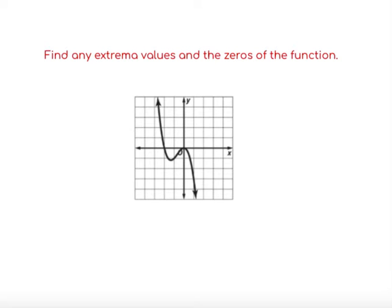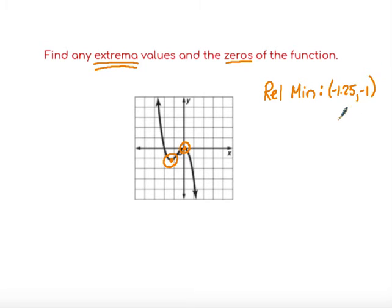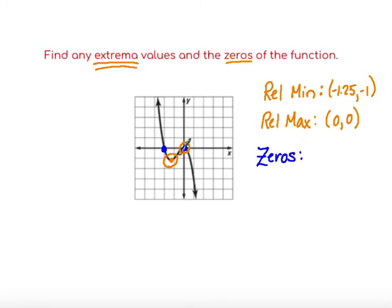Let's look at this polynomial function. It says find any extrema values — our mins and maxes — and find the zeros. Looking for the lowest and highest points: there's a low and there's a high. There's a relative minimum at approximately (−1.25, −1), and the relative maximum happens right at the origin — the point (0, 0). Now looking for the zeros: where does this function cross the x-axis? The zeros are located at approximately negative two and zero.